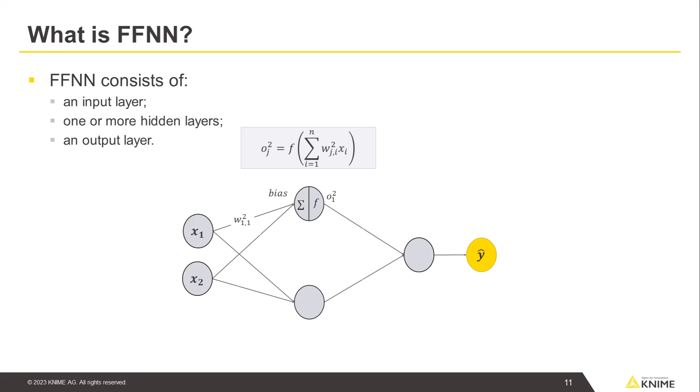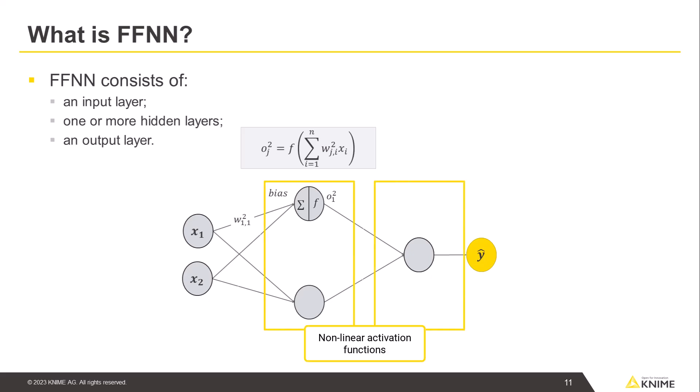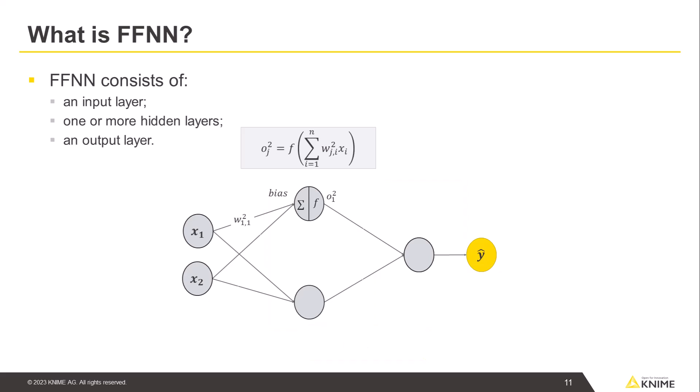Each layer can have the form of a vector, matrix, or multidimensional array, which we refer to as N-dimensional tensors. A feedforward neural network with nonlinear activation functions on all layers is called a multilayer perceptron. An FFNN is called fully connected if each neuron of one layer is connected to each neuron of the following layer. Such layers are called dense layers.